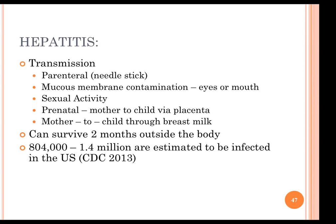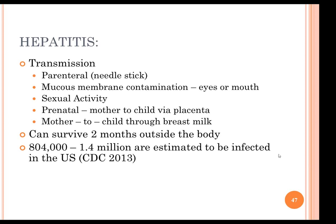An estimated 804,000 to 1.1 million people are infected with hepatitis in the United States today. Can you contract HIV or hepatitis B from drinking from a fountain, toilet seats, doorknobs, insect bites, shaking hands, sharing telephones, eating meals together, or sneezing or coughing? The answer is no. There is often concern about catching HIV or hepatitis through these common avenues, but it is not possible. There is no need to ostracize or separate yourself from someone in these situations.